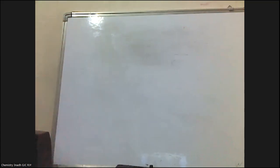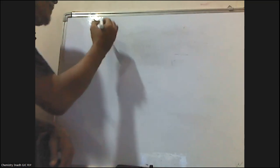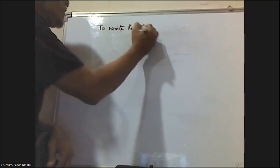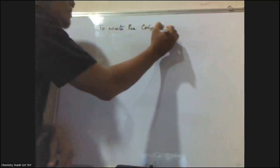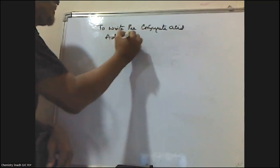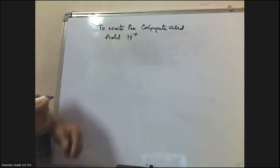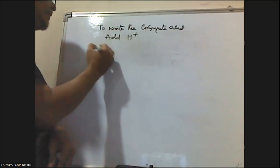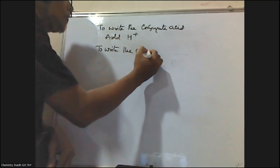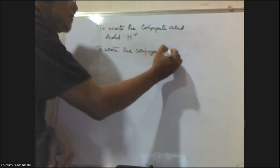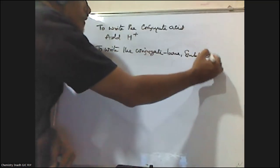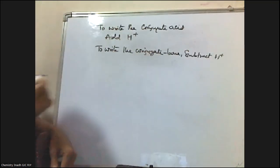Now, how do we write the conjugate acid or conjugate base for a given species? To write the Conjugate Acid, add one H⁺. And to write the Conjugate Base, subtract one H⁺.